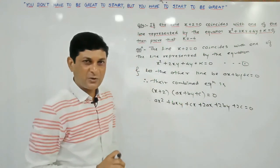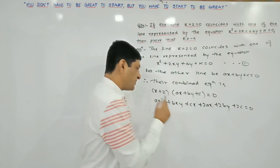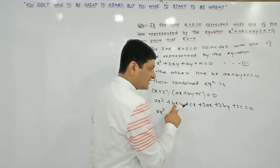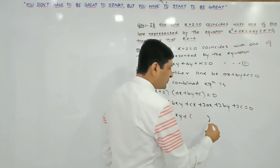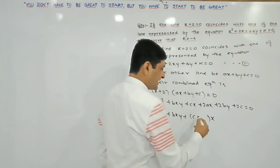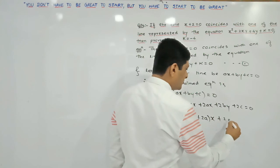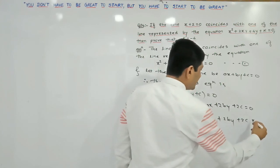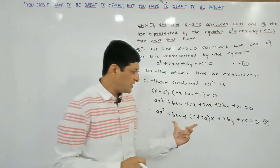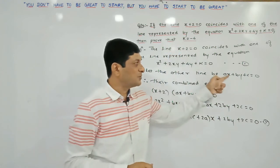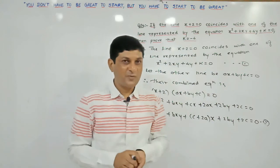We have taken the multiplication of these two equations. Simplifying: write the x squared term, collect the xy terms, collect the x terms — taking x common from the two x terms gives coefficient c plus 2a — then 2by plus 2c equals 0. Denote this as equation number 2. This equation 2 is the combined equation of these two lines, and the given equation is also the combined equation of the same two lines, meaning both equations are one and the same.